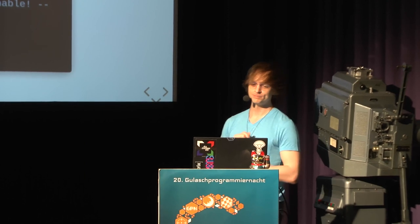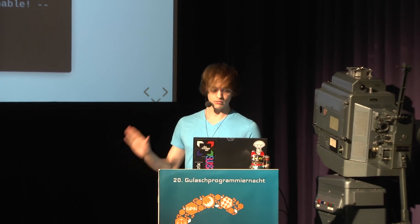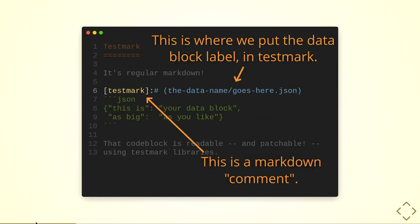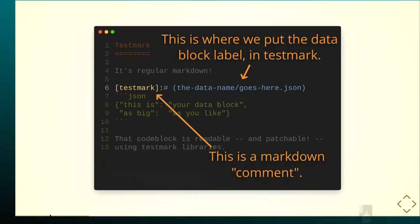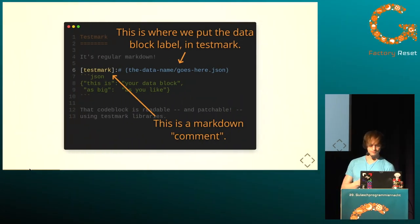Here it is. This is TestMark. It's regular Markdown — it's literally regular Markdown. What the improvement that TestMark is going to offer is this data hunk here, this piece of JSON in this example. This is going to be legible through a TestMark library as test fixture data, through a sort of pseudo file system abstraction. This format with the brackets and the pound sign is a comment that you can sneak into the Markdown format. It doesn't render in Markdown, so we can put more data in it.